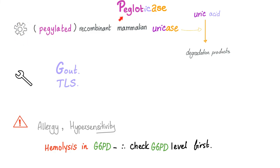Pegloticase's mechanism of action: it is a pegylated recombinant mammalian uricase. Birds naturally have uricase, but humans do not. Birds do not develop gout because uricase breaks down uric acid into degradation products, preventing hyperuricemia and monosodium urate crystal deposition. The idea behind pegloticase and rasburicase is to imitate nature by giving uricase to humans.